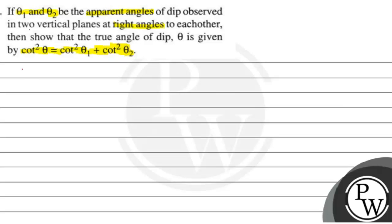So, the key concept is we know that tan theta, where theta is true dip, is equal to vertical component upon horizontal component. Or for apparent dip, apparent angle...